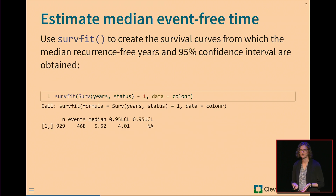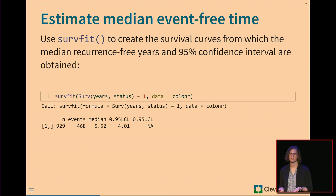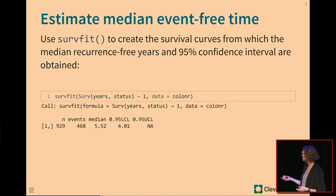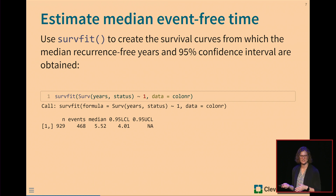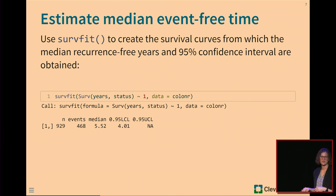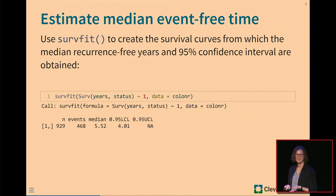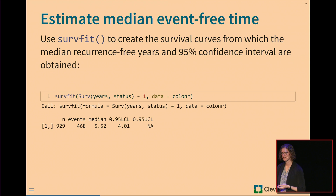One of the main things we might want to know is the average amount of time someone remains recurrence-free after each treatment, which we estimate using the median event-free time. We can get this from the survival package using the survfit function. On the left-hand side of our formula we have a Surv object with years and status; on the right side I put a one for the overall population. We find our population has 929 patients, 468 events, and a median event-free time of 5.52 years with a 95% confidence interval.